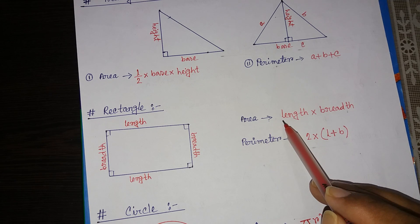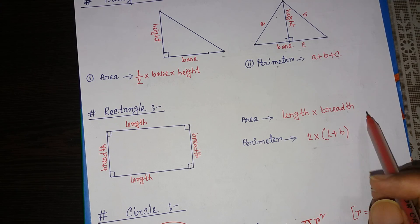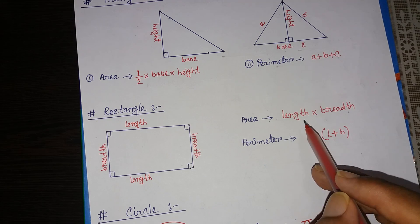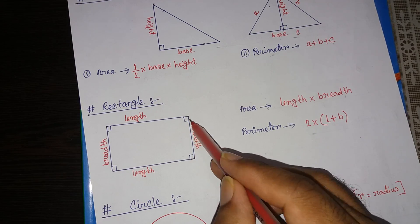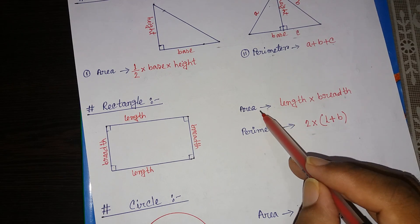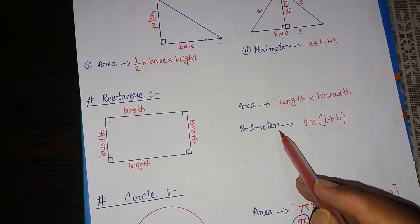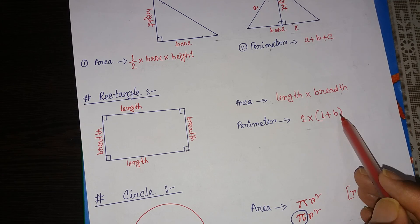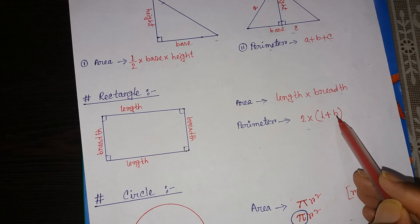Opposite sides are equal. The area of a rectangle equals length multiplied by breadth — sometimes we call breadth as width. This line is called the length and this one is the breadth. So area equals length into breadth.